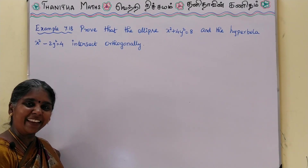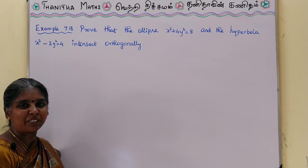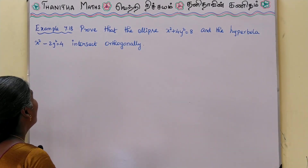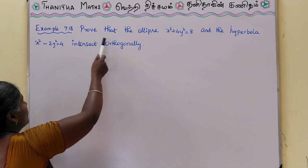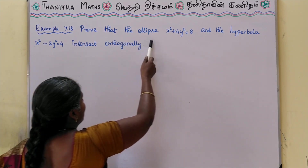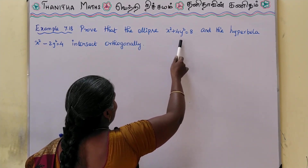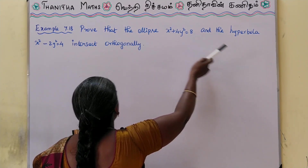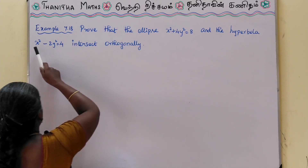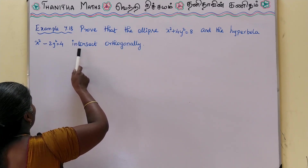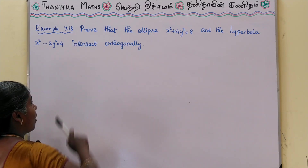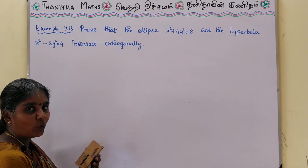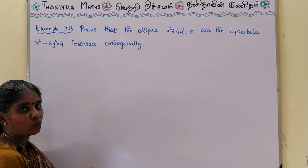My students, I am very interested in this video, Example 7.18. Prove that the ellipse x² + 4y² = 8 and the hyperbola x² - 2y² = 4 intersect orthogonally. So we have the ellipse equation and the hyperbola equation.